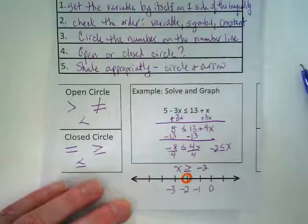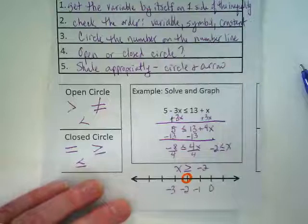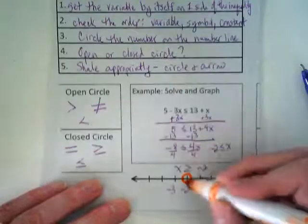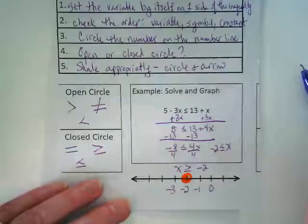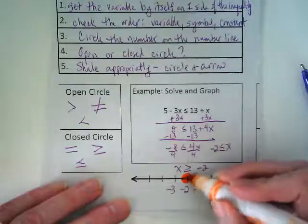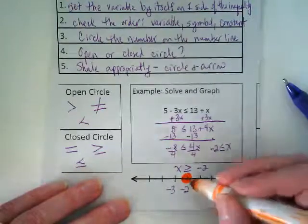Okay, it says circle the number on the number line. Ask the question, should it be an open or closed circle? That's step four. What kind of circle? Closed. And shade appropriately. What direction? To the right.